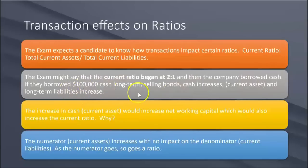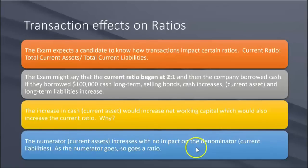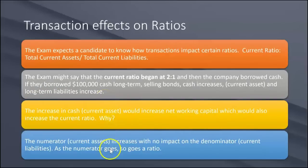If they borrowed $100,000 cash long-term by selling bonds, then cash increases — that's a current asset — and long-term liabilities increase. The increase in cash increases current assets, which increases net working capital and also increases the current ratio, because the numerator of the current ratio — current assets — is increasing with no impact on the denominator, current liabilities. As the numerator goes, so goes the ratio. The current ratio increases as a result of this long-term borrowing.